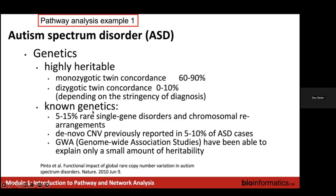People had started to realize that a lot of the autism spectrum disorder phenotype could be explained by de novo copy number variants. Steve Scherer's lab at the Hospital for Sick Children, whose main focus is studying autism spectrum disorder and its genetics, decided to look at de novo copy number variants to better explain the variance in the phenotype. They took about a thousand cases and a thousand controls and applied SNP arrays to genotype all the individuals. These SNP arrays measure the presence or absence of SNPs across the genome.